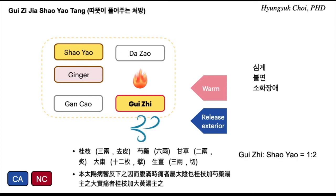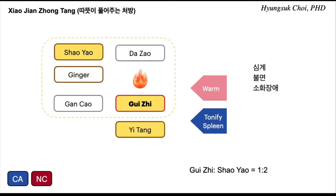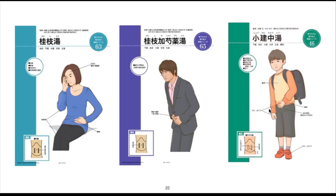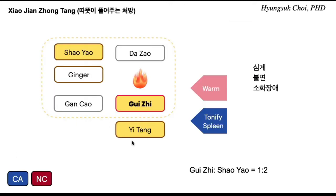What is the difference between gui-ji-jia-xiao-yao-tang and xiao-jian-jong-tang? The only difference is this sugar — syrup, maybe maple syrup. Same thing. So gui-ji-jia-xiao-yao-tang is for abdominal pain and stomach pain, but xiao-jian-jong-tang is for children. They just added sugar.